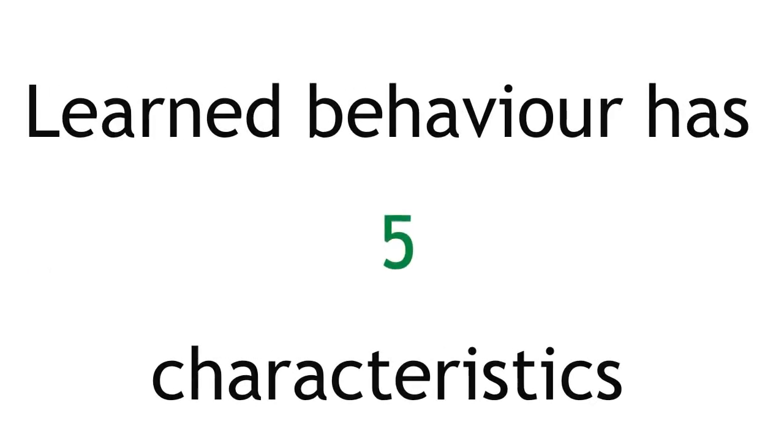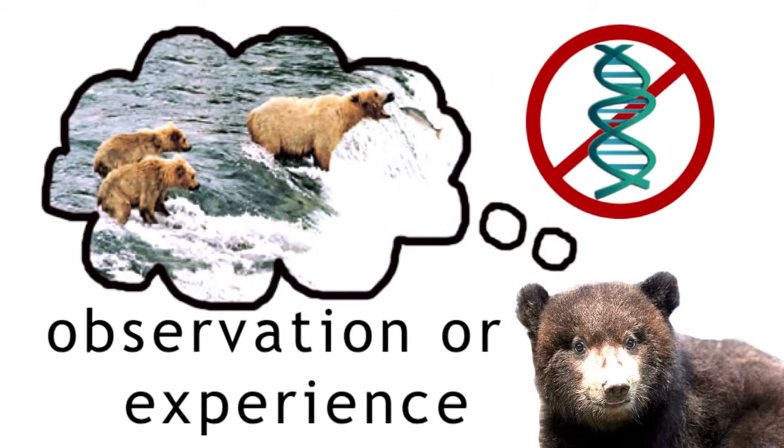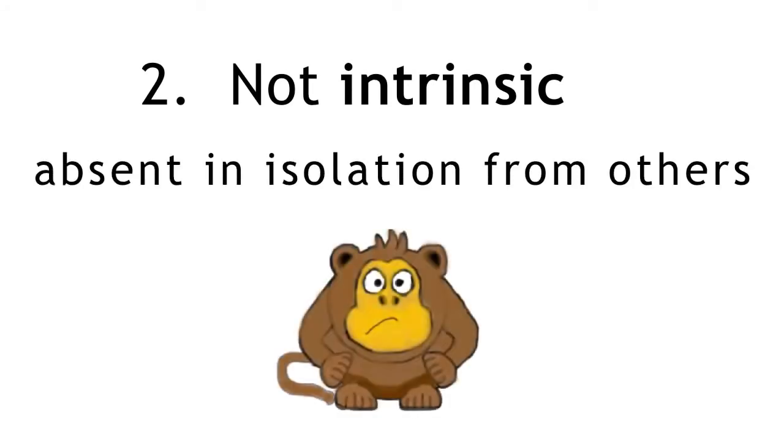Learned behaviour has five characteristics. It is non-inheritable, so it isn't passed on from previous generations. It is only acquired through observation or experience. Two, it is not intrinsic, so absent in animals raised in isolation from others.